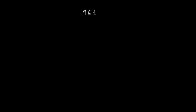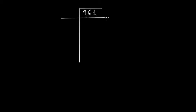In this video tutorial we are going to discuss how to calculate the square root of a square number by long division method. We have a number here, 961, and yes it's a square number. You have to calculate the square root of this number. So first put a horizontal line like this, then another vertical line, and then another horizontal line.